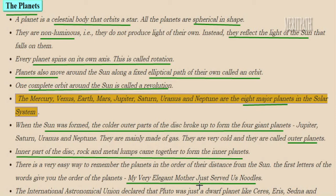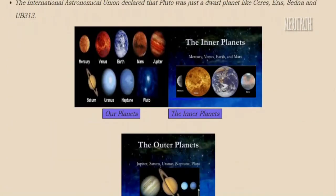The easier way to remember the names of the planets is to remember one sentence: 'My very elegant mother just served us noodles.' Every word's starting alphabet denotes a planet — My is Mercury, Very is Venus, Elegant is Earth, Mother is Mars, Just is Jupiter, Served is Saturn, Us is Uranus, and Noodles is Neptune.